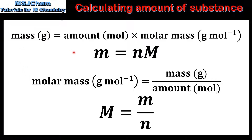To calculate the mass in grams, multiply the amount in moles by the molar mass. And to calculate the molar mass, divide the mass in grams by the amount in moles. The use of these equations will be covered in a separate video.